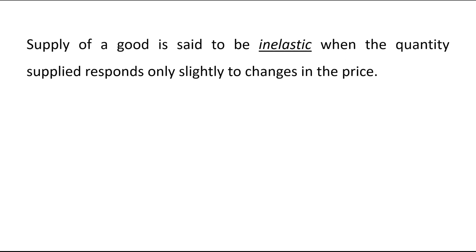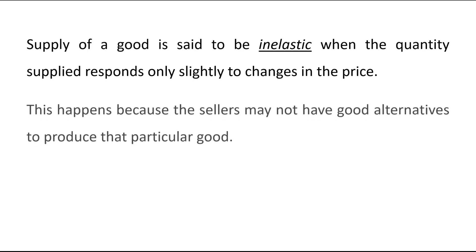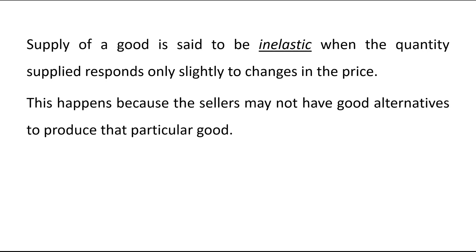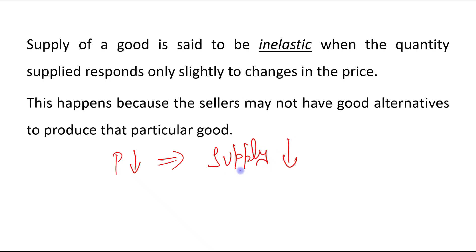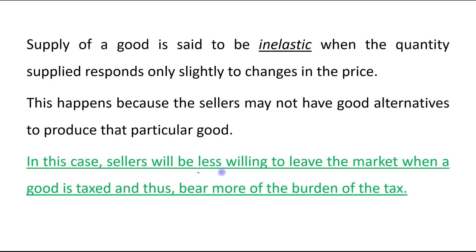Supply of a good is said to be inelastic when the quantity supplied responds only slightly to changes in the price. This happens because the sellers may not have good alternatives to produce that particular good. When a good is taxed, price received by the sellers decreases. So supply will be decreased, but there will be only a slight decrease in supply because sellers are not having good alternatives. In this case, sellers will be less willing to leave the market, and when they remain in that market, they will bear more of the burden of the tax.